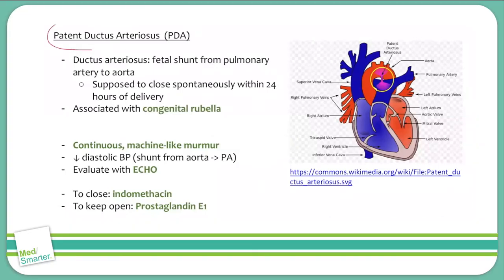A patent ductus arteriosus is an example of an acyanotic heart defect. You'll recall from embryology that the ductus arteriosus is a shunt in the fetal circulation from the pulmonary artery to the aorta. You'll see over here on the right side an example of a patent ductus arteriosus, connecting the pulmonary artery and the aorta.